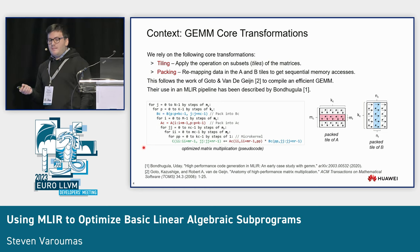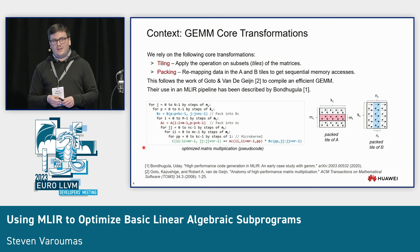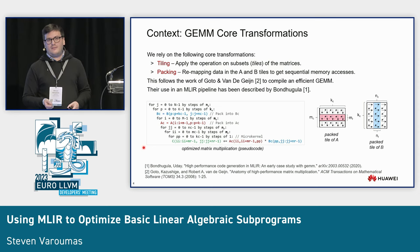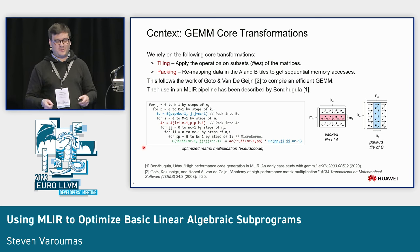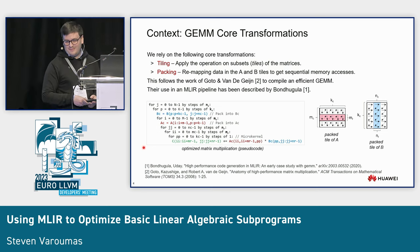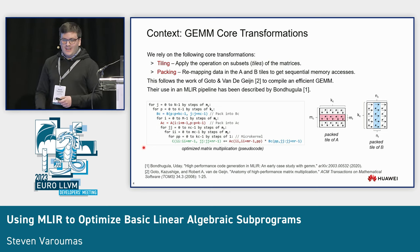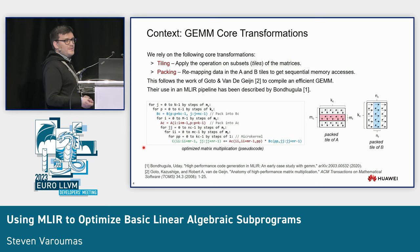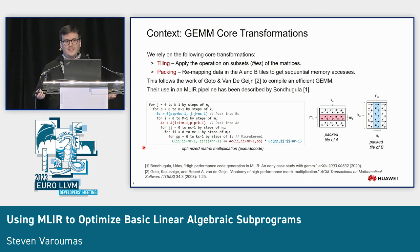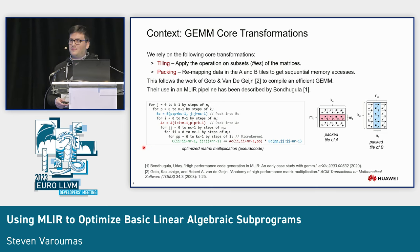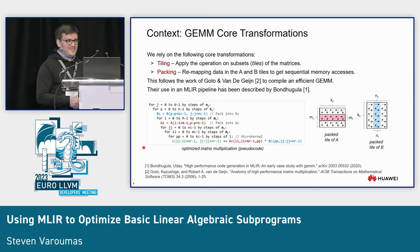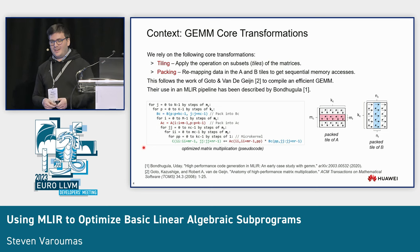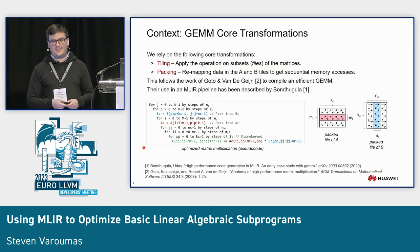Since we focus on GEMM, we rely on two core transformations. The first is tiling — the idea is to apply the operation on a subset of the matrices that we call tiles. Packing consists in remapping the data in these tiles so that we get sequential memory accesses. This is not new — it follows the work of Goto and van de Geijn on how to compile an efficient GEMM, and has also been described in recent MLIR papers.